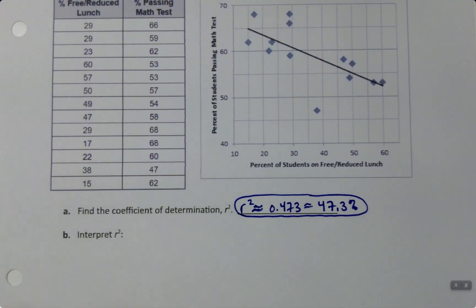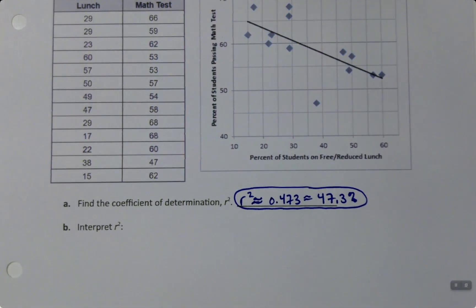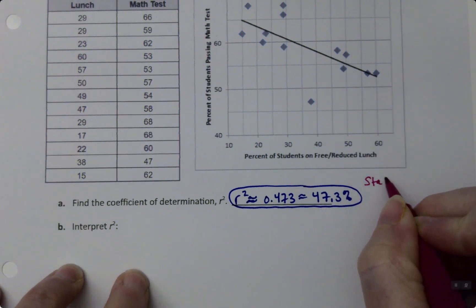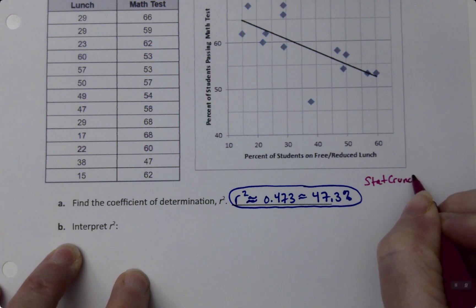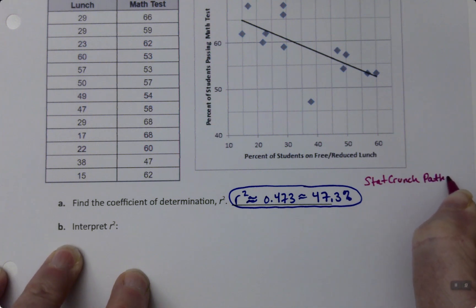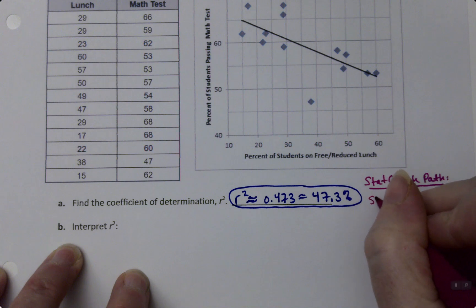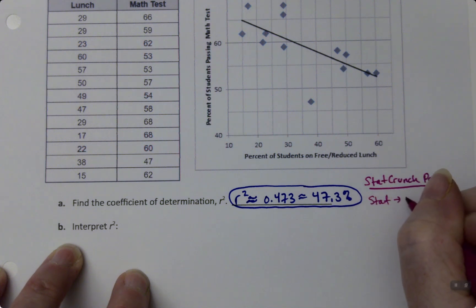It's very common with R-squared values to write them as a percentage rather than as a decimal because of the interpretation script. Let's write our StatCrunch path for ourselves so we know how we did it.